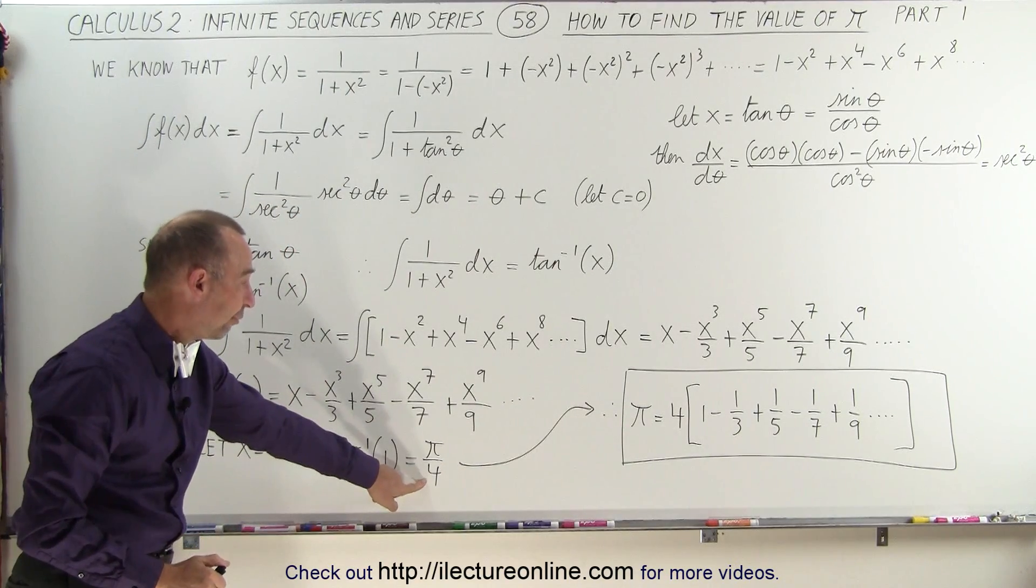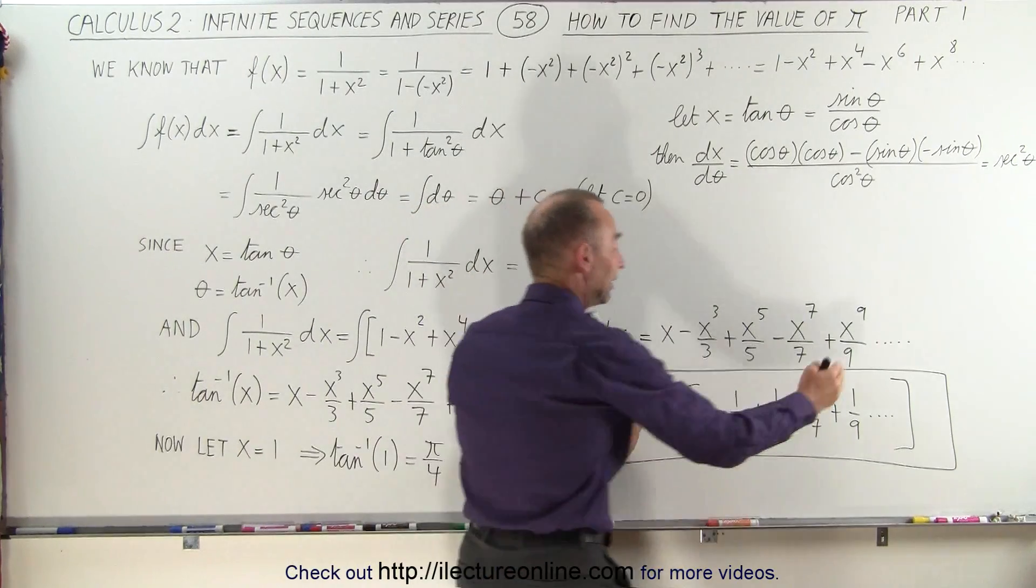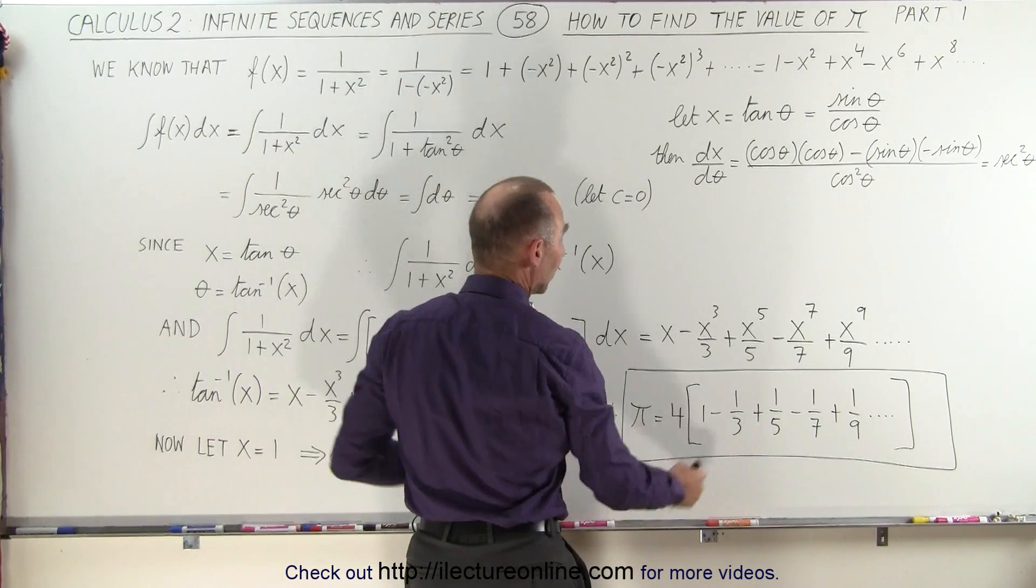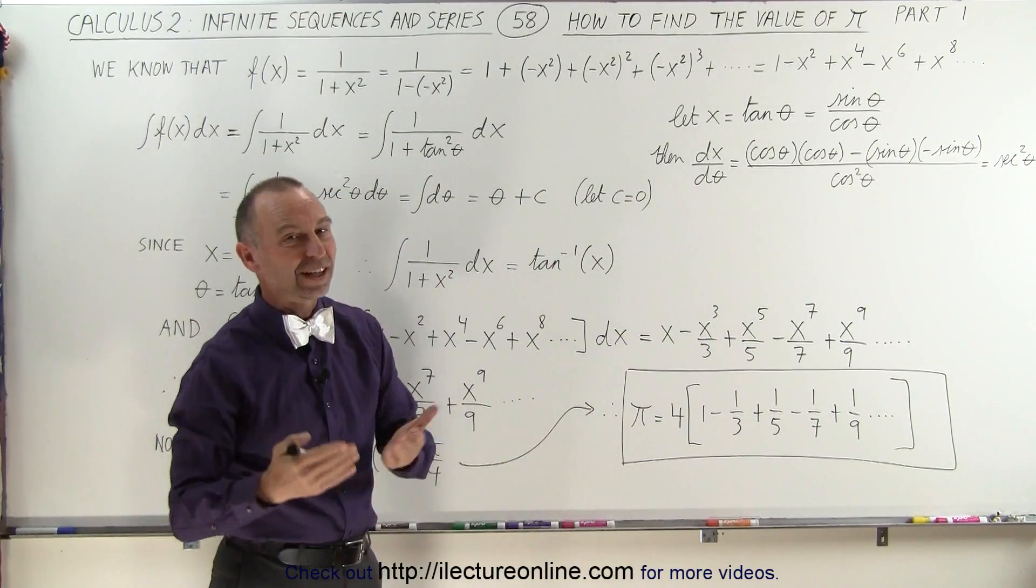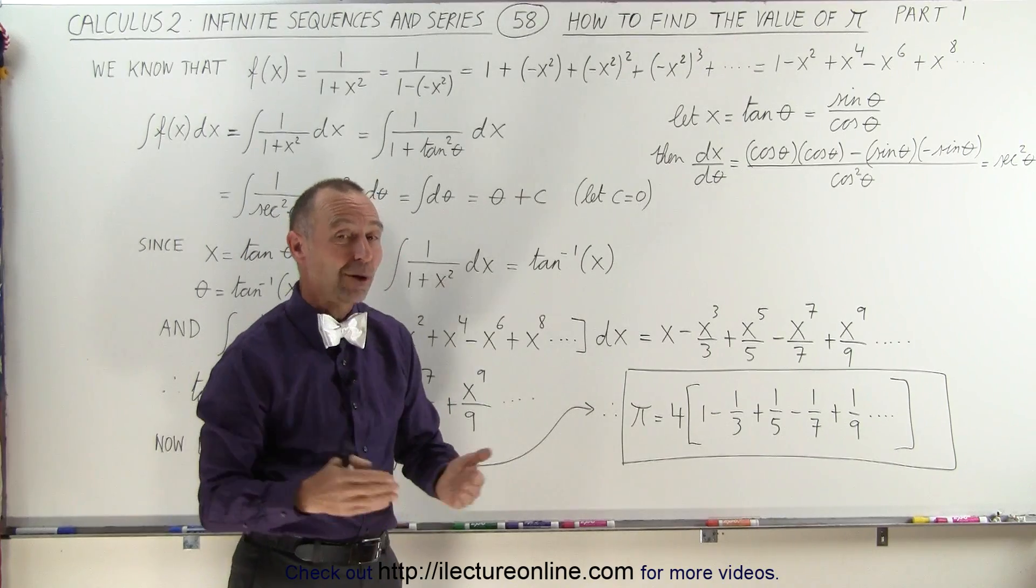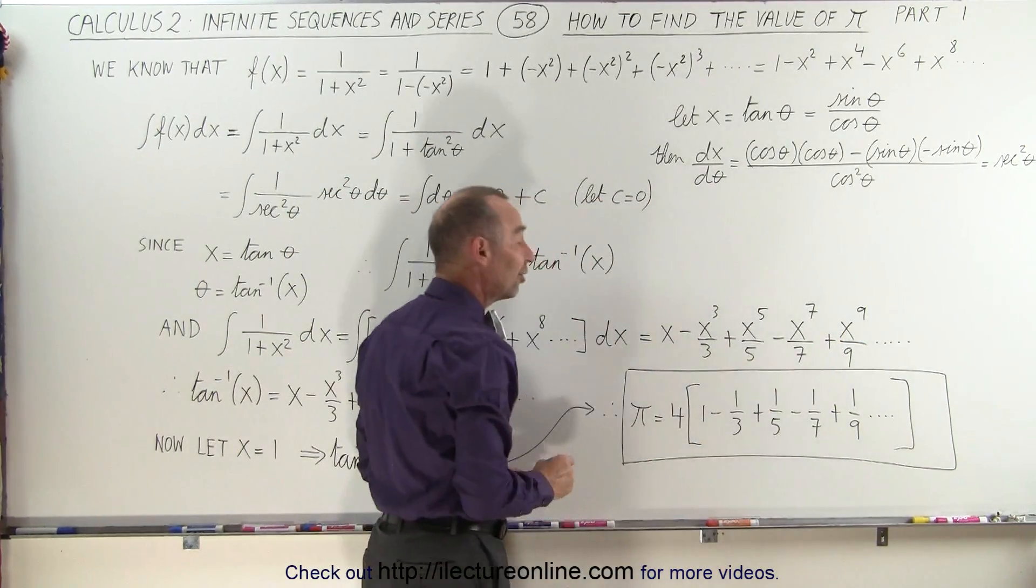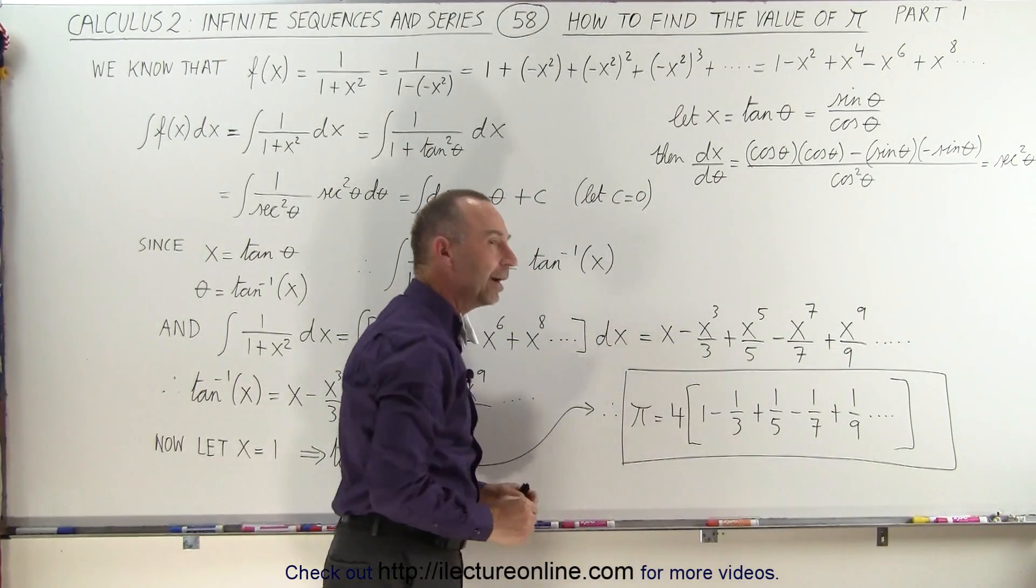We multiply both sides by 4, and we know now that pi is equal to 4 times the series representing the integral of this function with every x equal to 1. All you have to do now is get a calculator or maybe a small computer program and just start adding these terms up. Eventually you will see that if you go enough terms, you get the value for pi, at least to a certain number of decimal places.